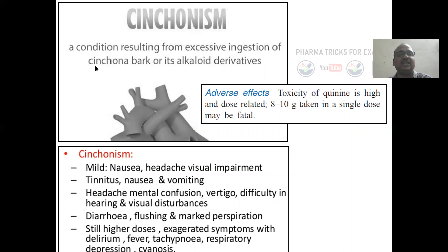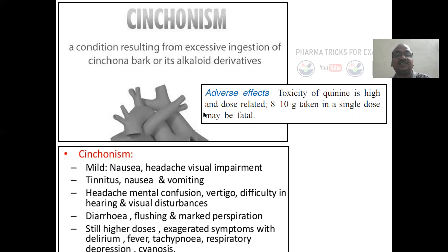Cinchonism occurs with excessive ingestion of cinchona bark. Symptoms include mild: nausea, headache, tinnitus; moderate: nausea, vomiting, headache, mental confusion, diarrhea; marked: fever, tachyphonia, respiratory depression. Toxicity of quinine is high and dose-related. A single dose of 8 to 10 grams may be fatal.